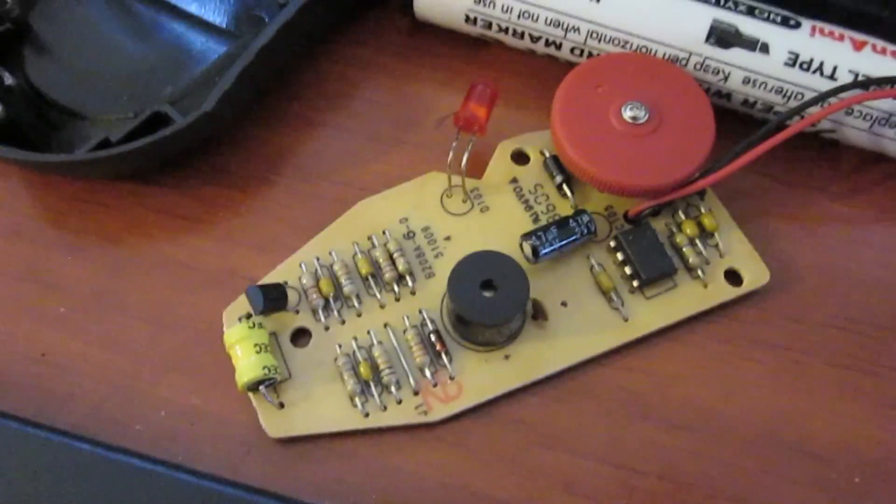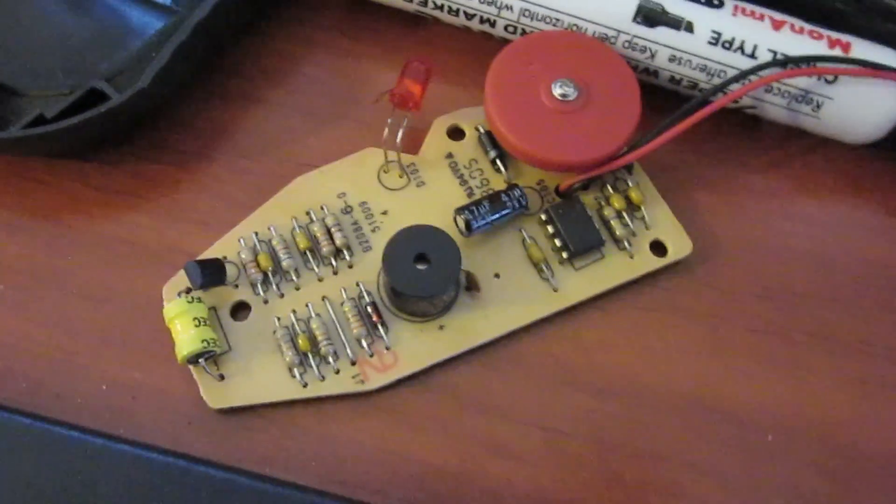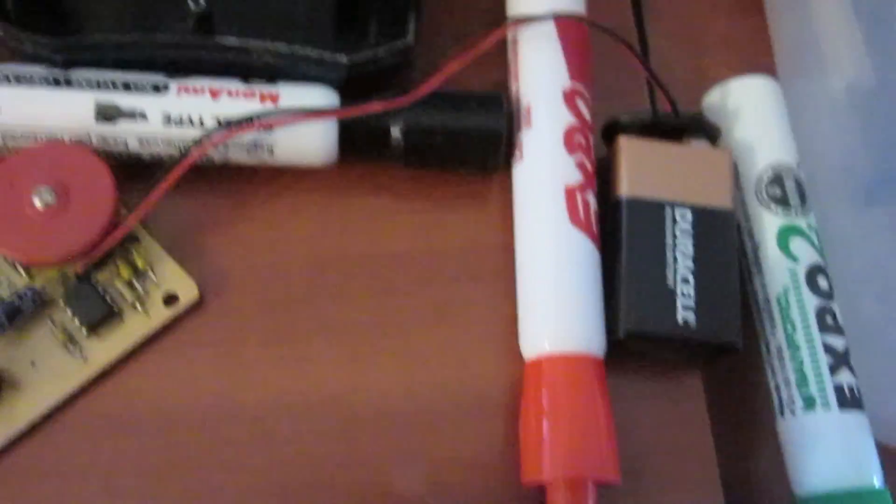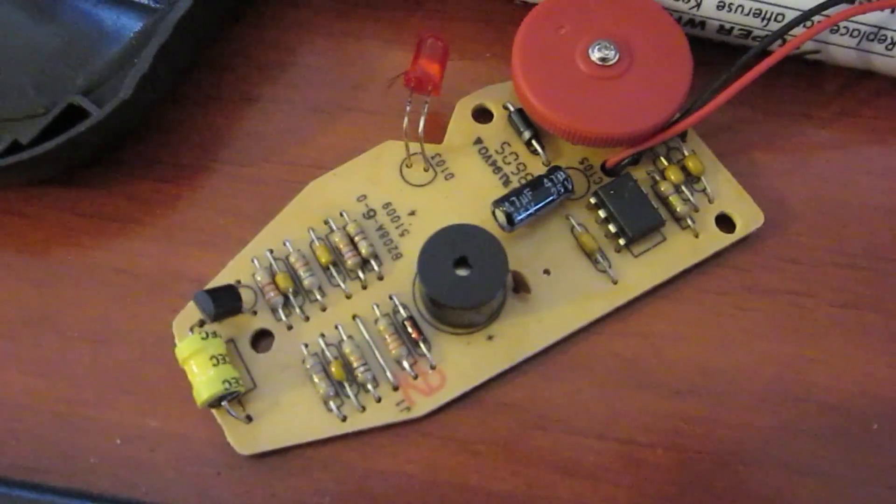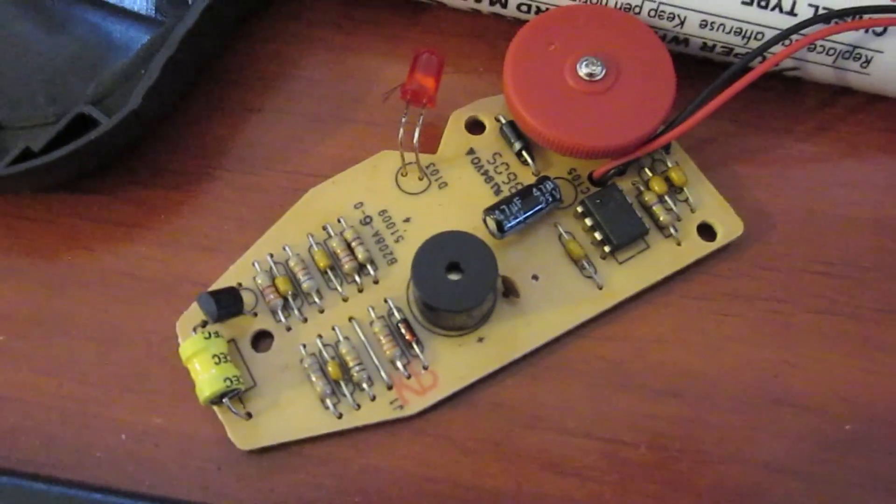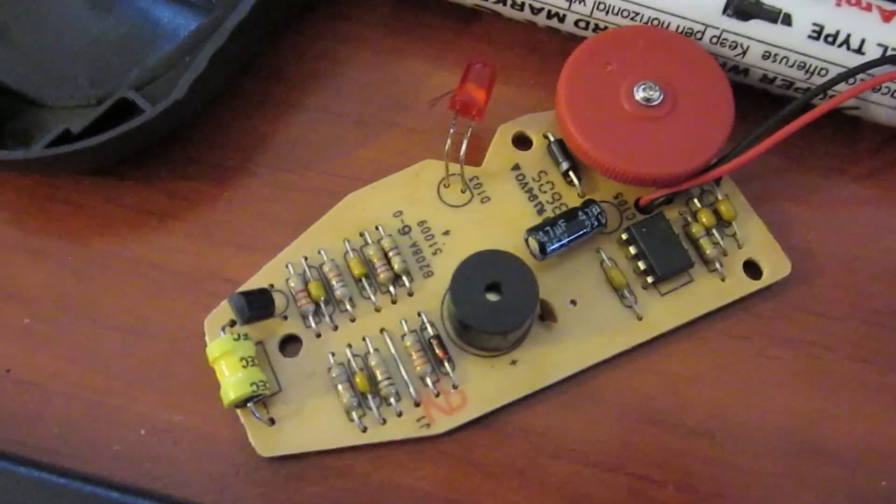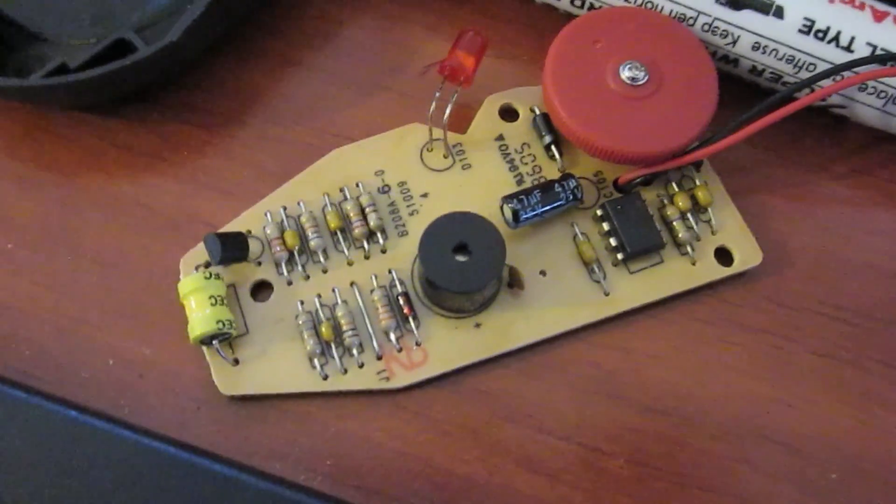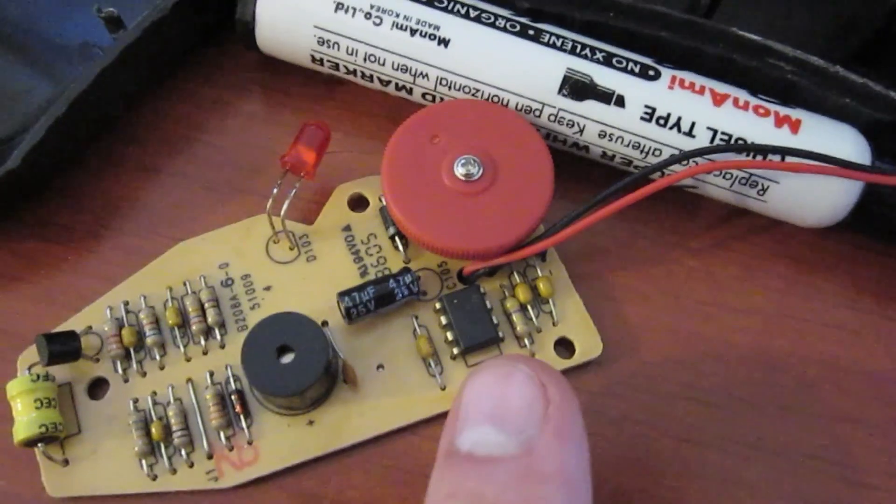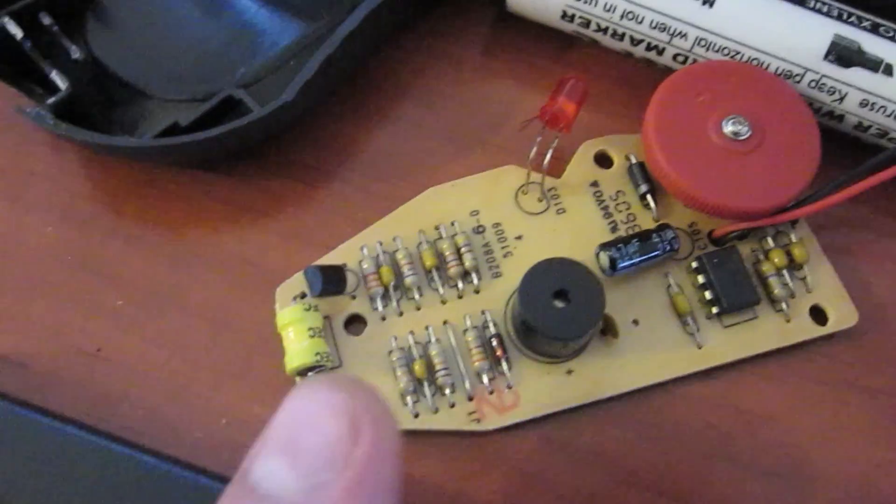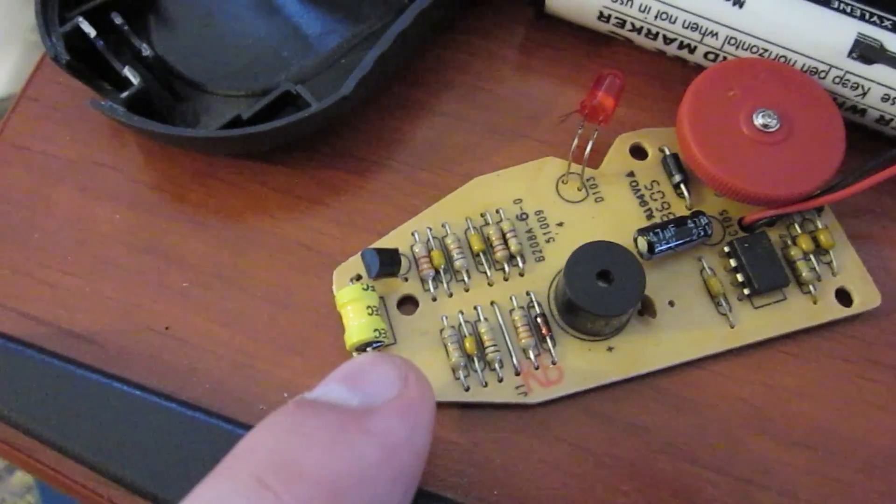So this is the receiver inside the handheld unit. Black and white, red wires just connect to battery. I haven't taken the time to reverse engineer this. And maybe I will, maybe I won't. I'm not sure yet. But basically it's a 555 timer right here.